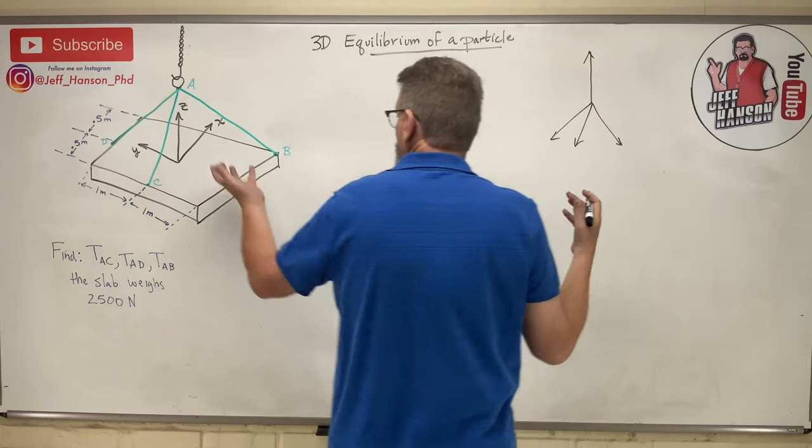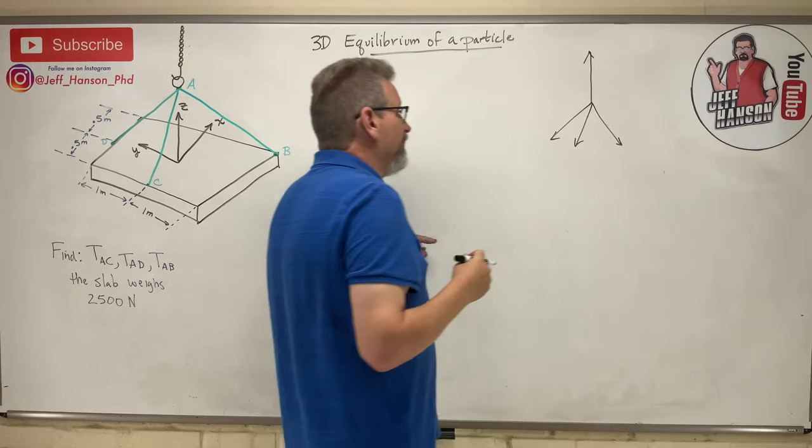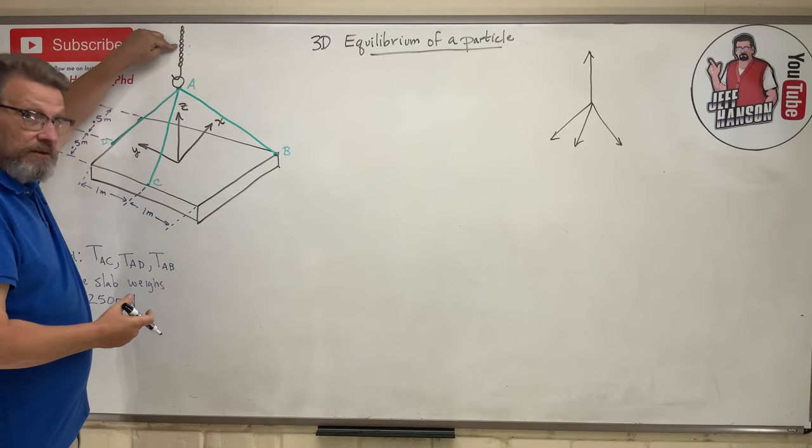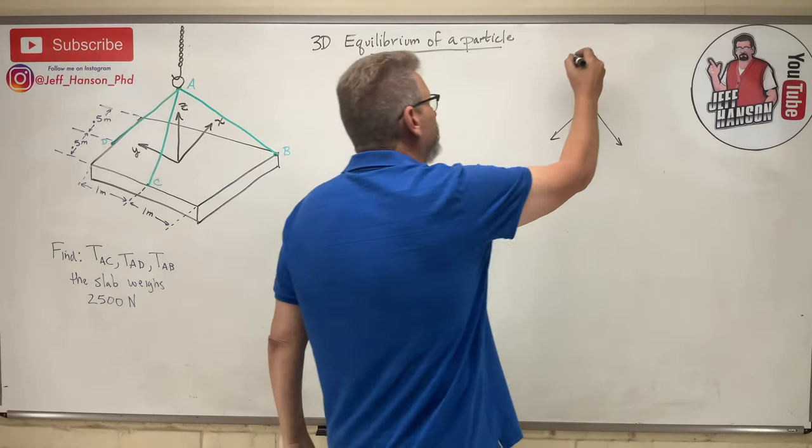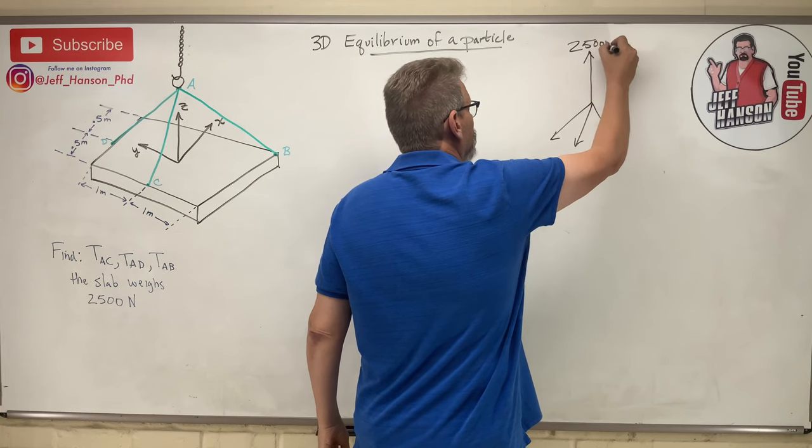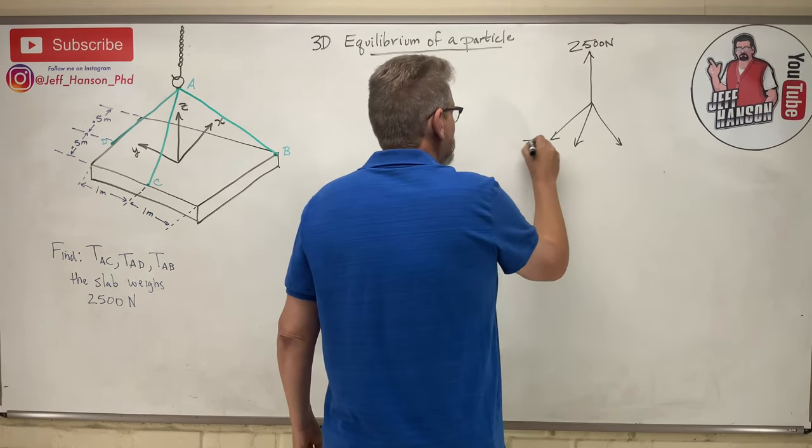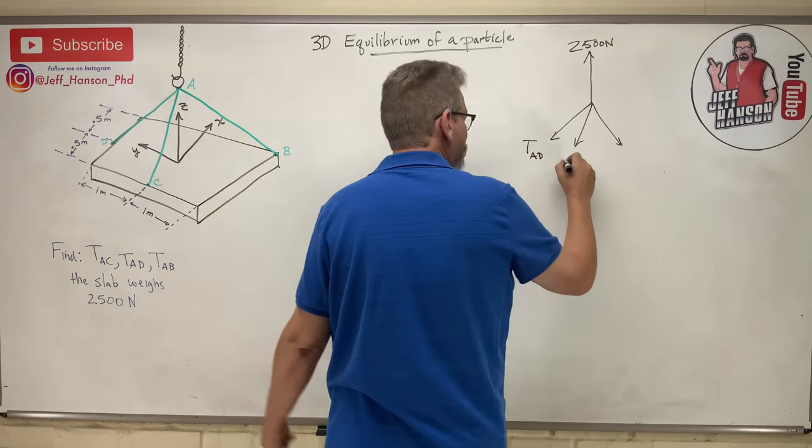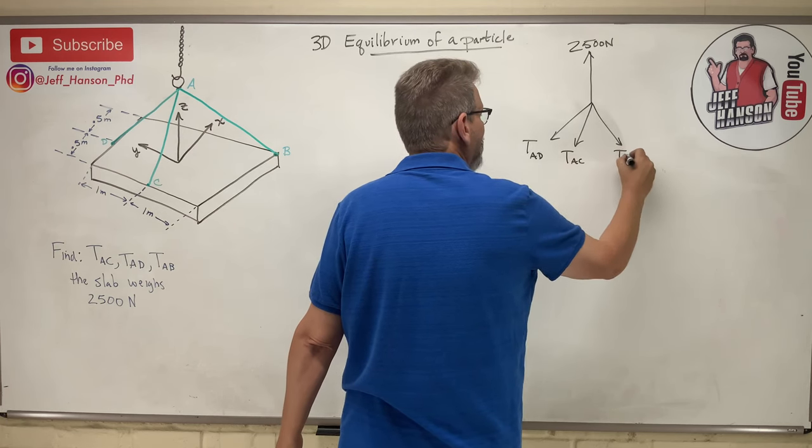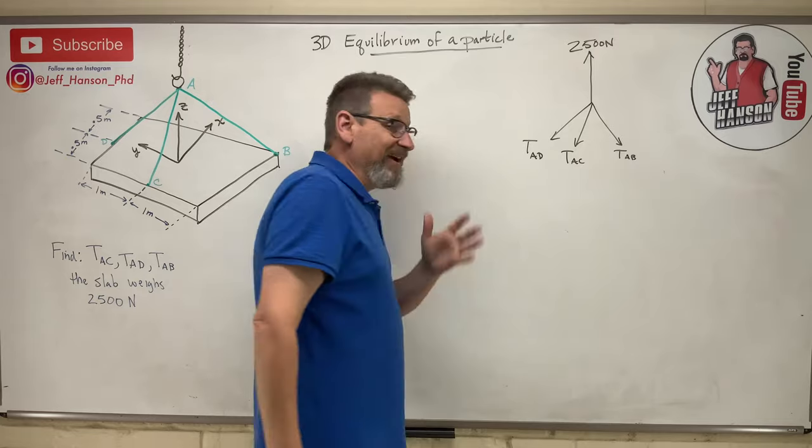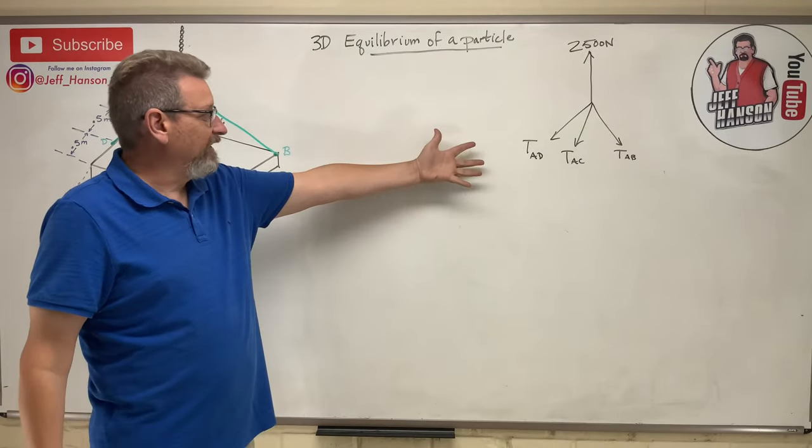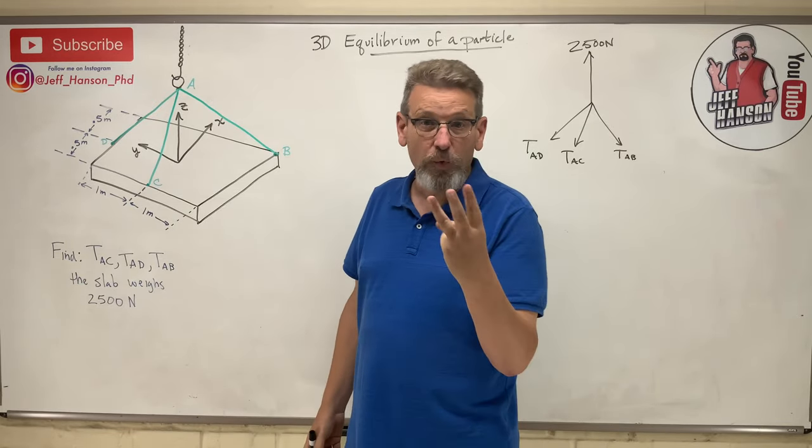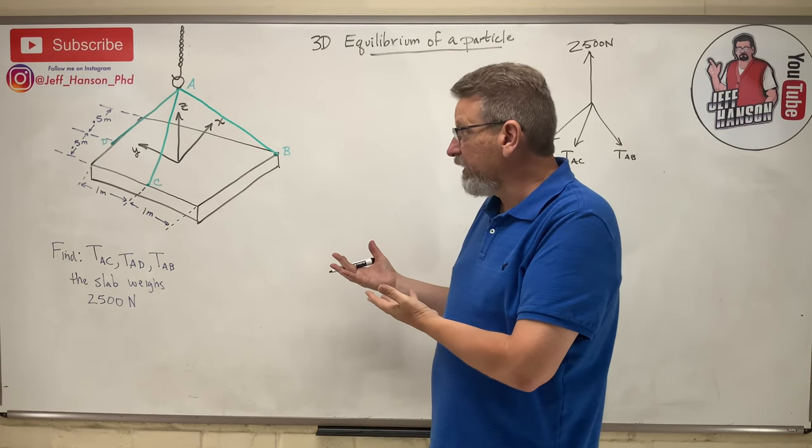This thing has a cable and a cable and a cable. And that's about as good as I can represent those cables. Now if this thing weighs 2,500 newtons, what do you reckon the force in that chain is? 2,500 newtons, right. So that upward force there is 2,500 newtons.